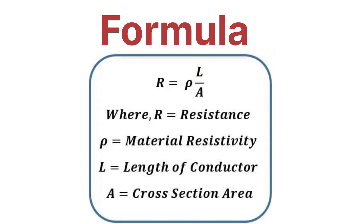Now let's talk about the formula for resistance. Resistance is generally represented as R. R equals rho times L divided by A, where rho is the resistivity of the medium or conductor, L is the length of the conductor, and A is the cross-sectional area of the conductor.